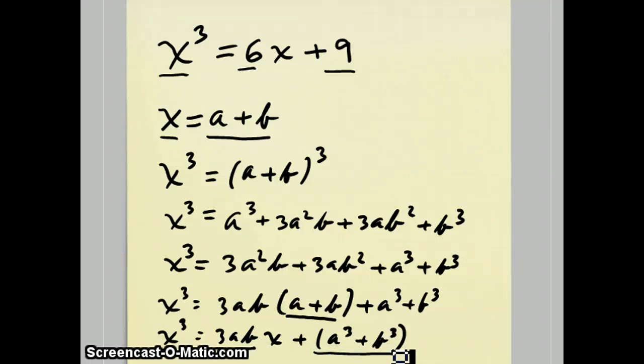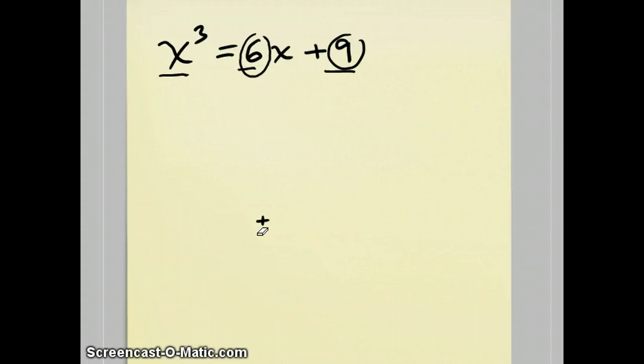So the trick is to equate the coefficient of the x term with 3ab and to equate the constant with a cubed plus b cubed. Now for this example,